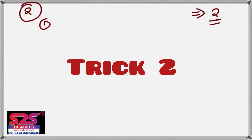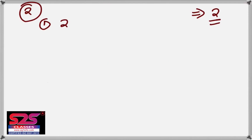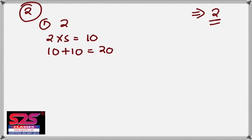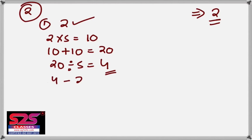Suppose I take the number to be 2. You tell the person to pick any whole number between 1 to 10. If they take 2, multiply it by 5 to get 10, add 10 to get 20, divide by 5 to get 4, and then subtract the original number: 4 minus 2 gives 2, which I already predicted.